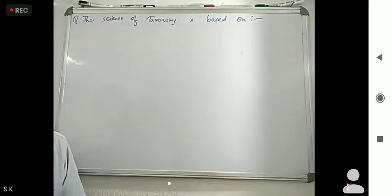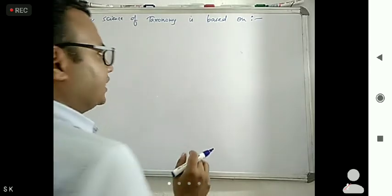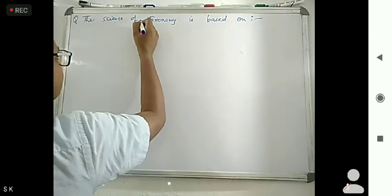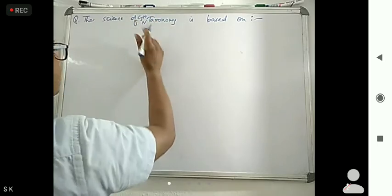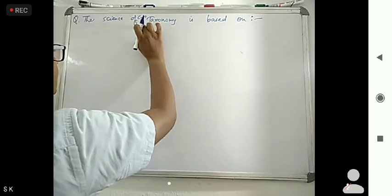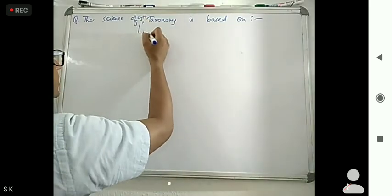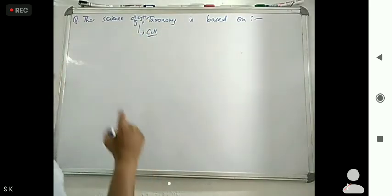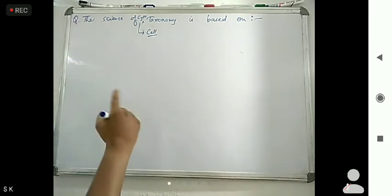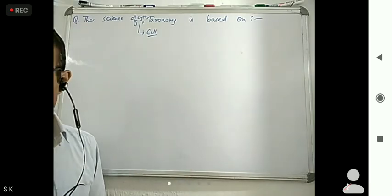The science of cytotaxonomy is based on what? Here we are specifically asking about cytotaxonomy. We know that 'cyto' means cell-related. So the question is: the science of cytotaxonomy is based on which of the following options?